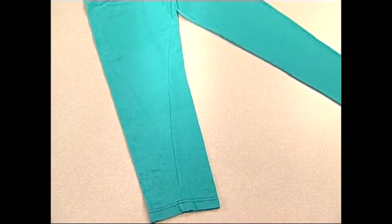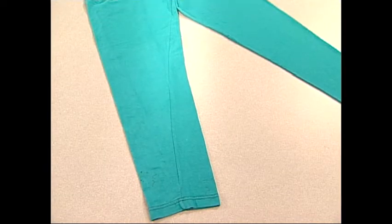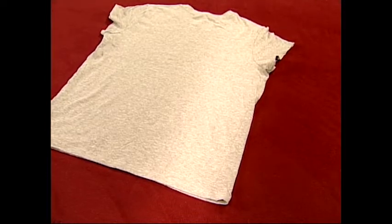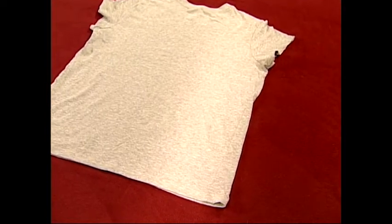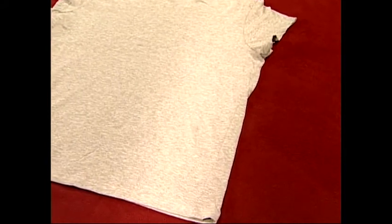AATCC Test Method 179 – Skewness Change in Fabric and Garment Twist Resulting from Automatic Home Laundering. This test method determines change in skewness in woven and knitted fabrics or twist in garments when subjected to repeated automatic laundering procedures commonly used in the home. Washing and drying procedures used for shrinkage tests and other home laundering tests are specified for this method.